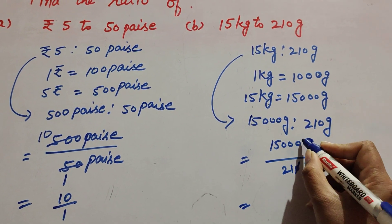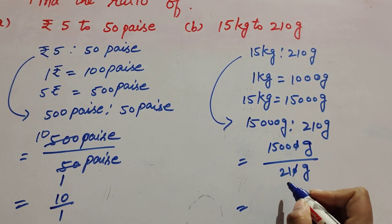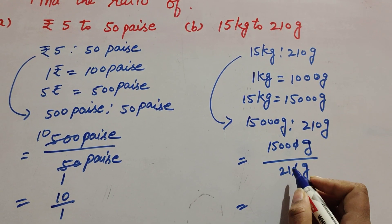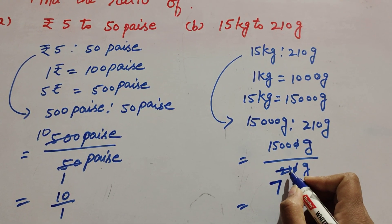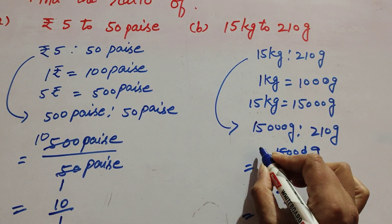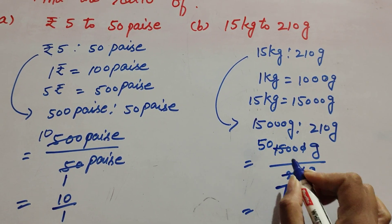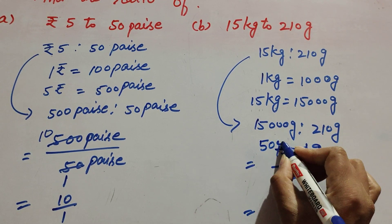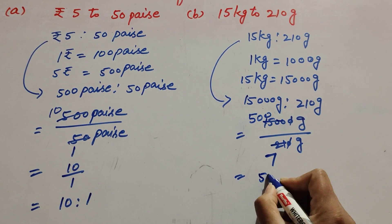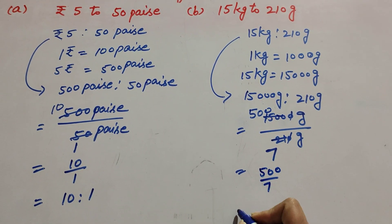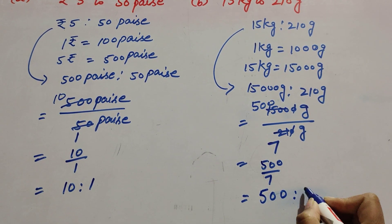The zeros in the denominator and numerator are cancelled. Then 1500 and 21 are both divisible by 3 — three sevens are 21 and 500 threes are 1500. So it is equal to 500 over 7, and its ratio is 500 ratio 7.